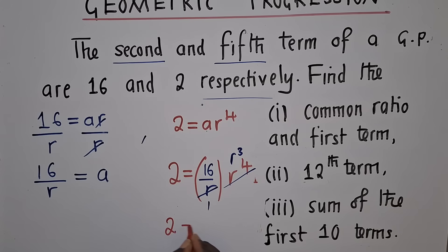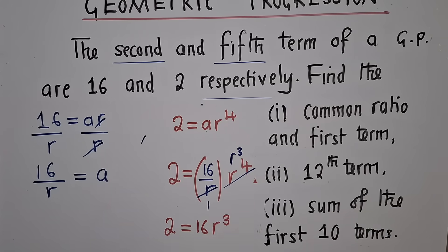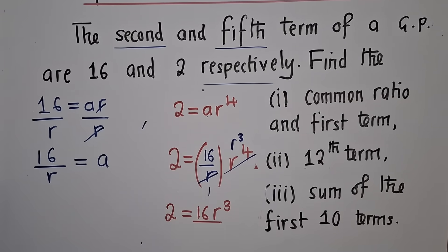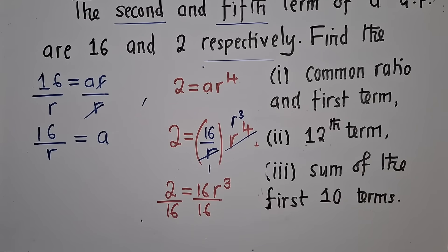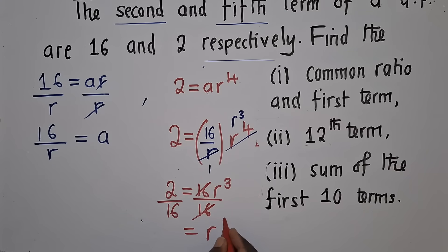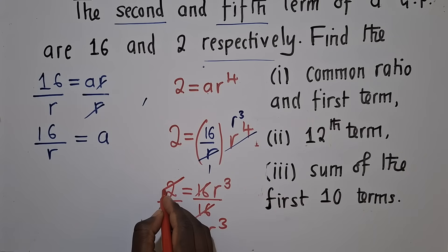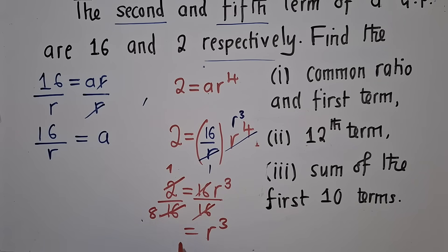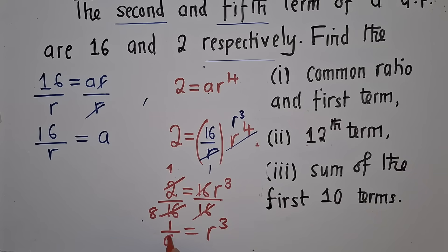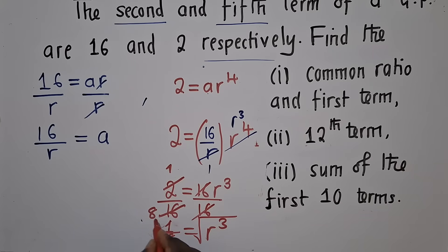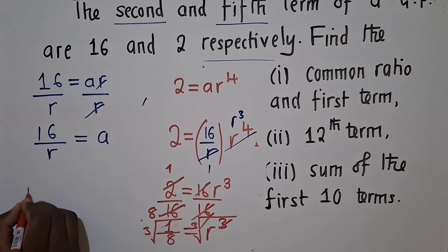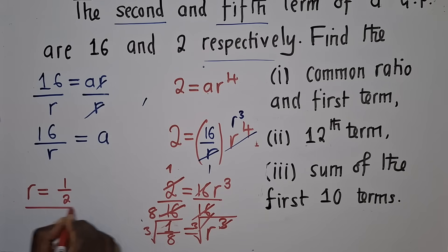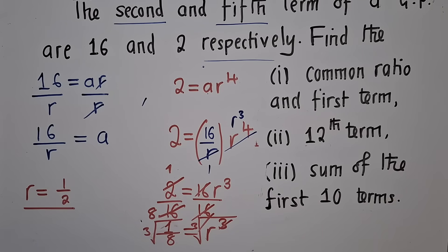So we can clean up. We have 2 is equal to 16 R power 3. Divide by 16. So when we divide by 16, the 16 and the 16 will go. We shall remain with the R power 3. 2 into 2 is 1, into 16 is 8. We have 1 over 8. Cube root both sides. So the 3 and the 3, the root and the power 3 will go. We shall remain with R is equal to 1 over 2.